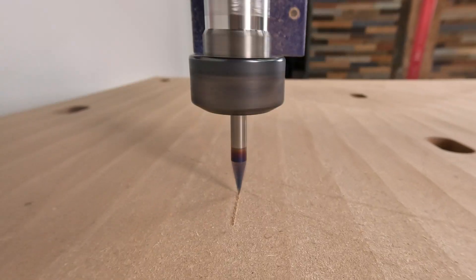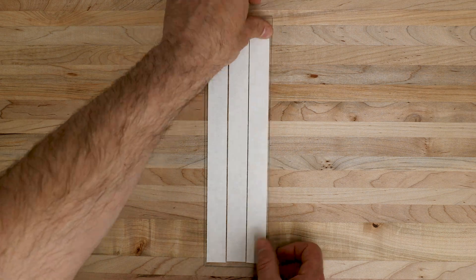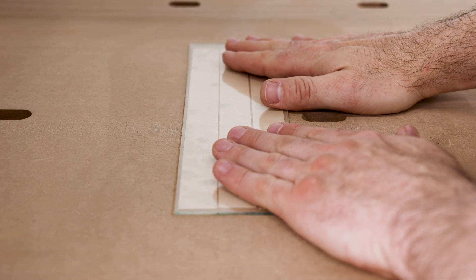But first, I'm going to mark the size of the glass pane onto the spoil board. Then, we'll apply some double-sided tape and adhere the glass pane to that exact spot. This way, my etching will be right where it needs to be.